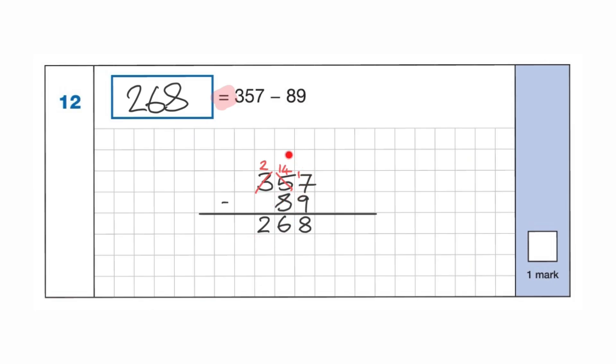A few exchanges, so we need to be clear on the presentation, but not being worried about the way this is showing it. It's understanding that the equal sign just means balance. This is the same as this. So 357 take away 89 is 268, and we've written 268 here.